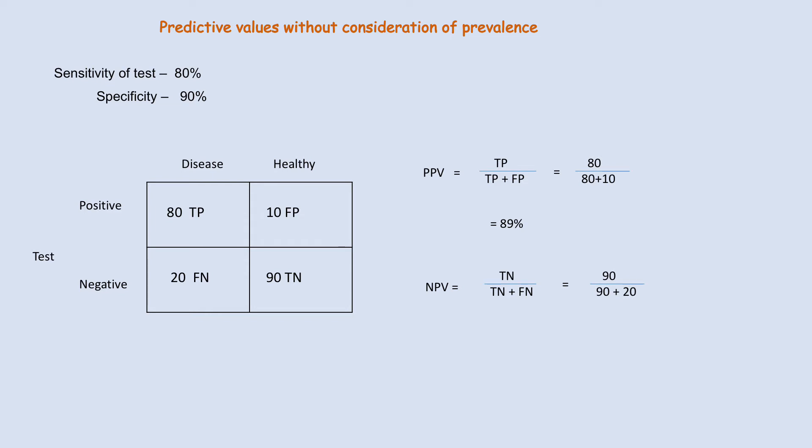If the test result is negative, we can calculate negative predictive value. The formula is true negative divided by all negative results — that is, true negative plus false negative. In this case, negative predictive value is 81%, meaning an 81% chance that the negative result is a true negative, or an 81% chance that the person is healthy and does not have the disease.